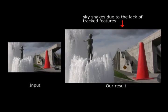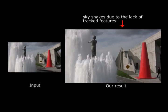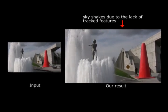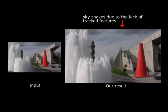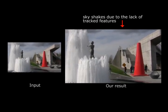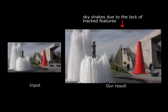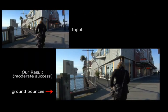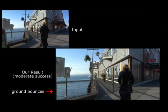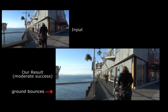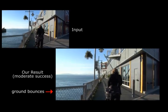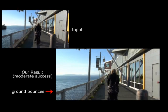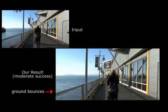Our results are not always perfect. In this example, we can see that the sky region has some shake, because its low contrast causes the number of tracks in that region to be too low for us to stabilize. Also, in the paper we refer to some results as moderately successful. Here's an example where the output is clearly better than the input, but some bounce from the original camera motion is still visible.